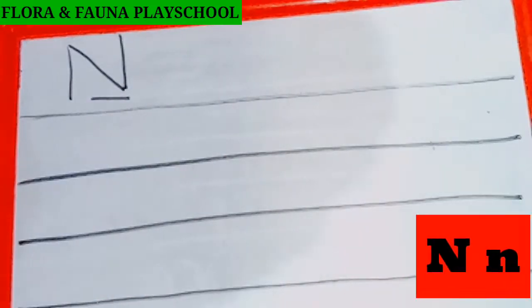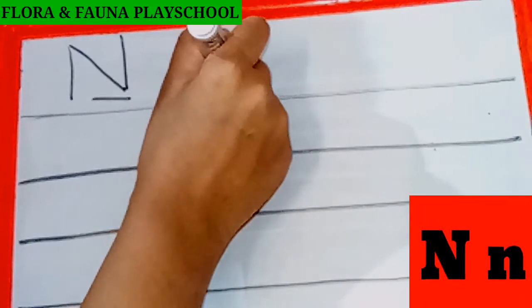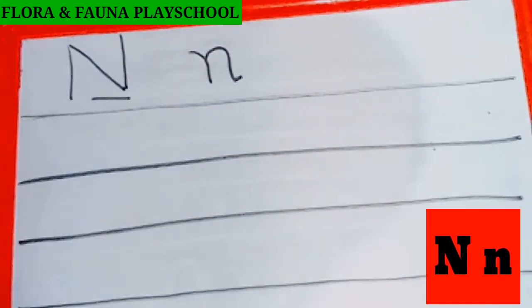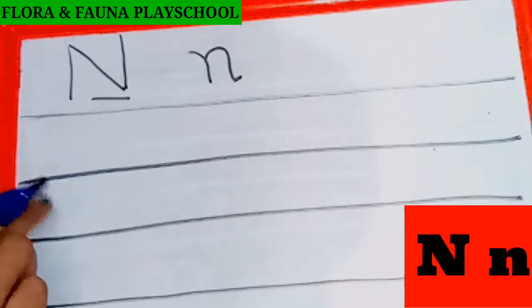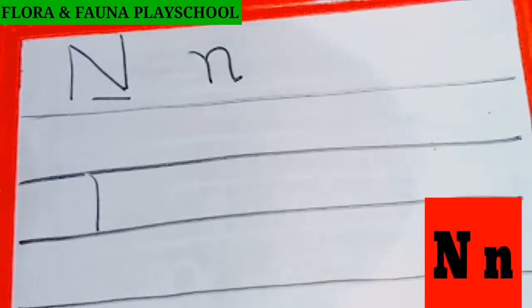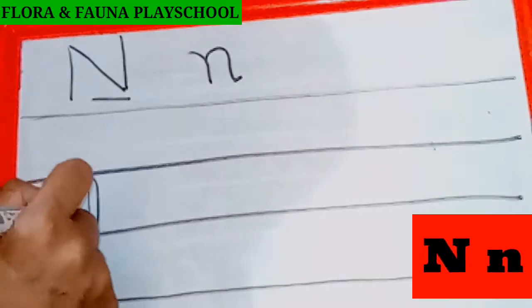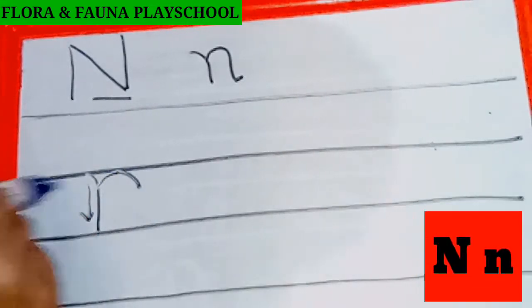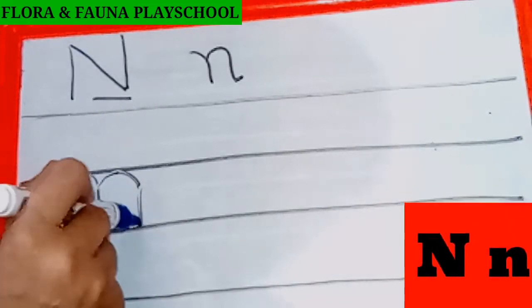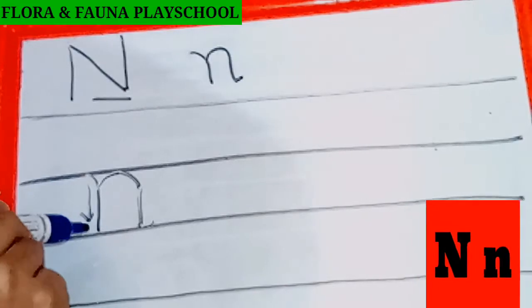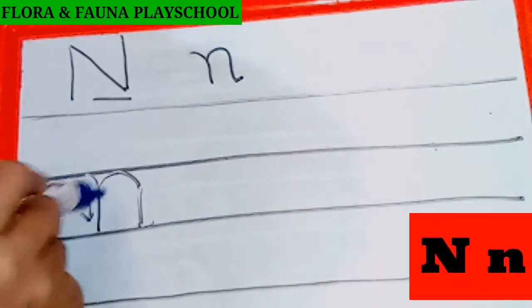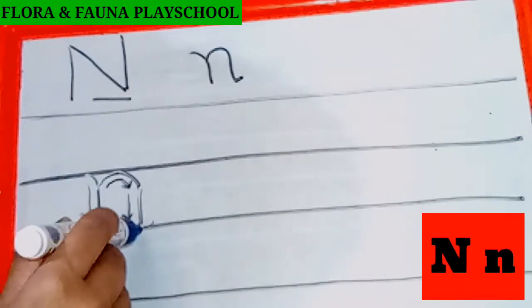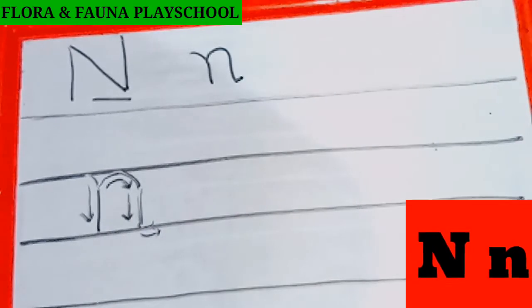You all know how to write capital letter N, right? Small letter N is written like this. In the middle line, draw a standing line — the way you did for M. Then a small curve and a standing line, and a small curve in the forward direction. So you made a standing line, then a curve, then again a standing line in the downward direction, and a small curve in the forward direction.